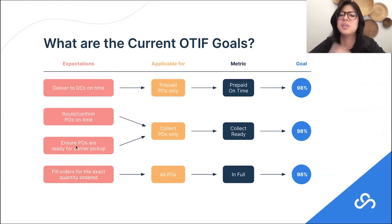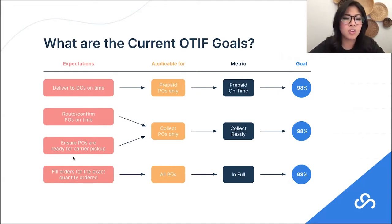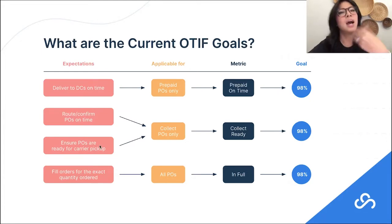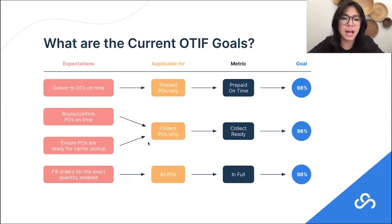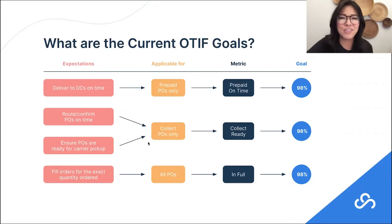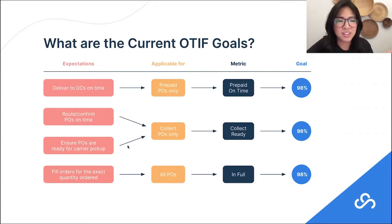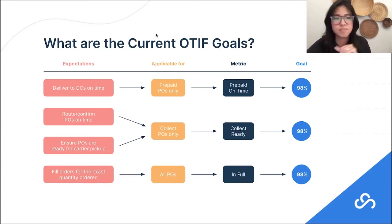The second thing for collect-ready suppliers is making sure that POs are ready for the carriers to actually pick up. After you've routed and set the appointments, when the Walmart fleet shows up at your warehouse, you want to make sure those POs are staged and ready to go. You don't want the truck to show up and you're still picking and loading. Just make sure those are ready to be picked up whenever you can.